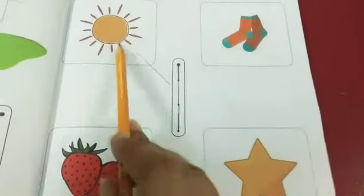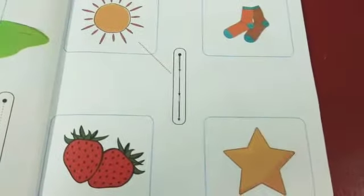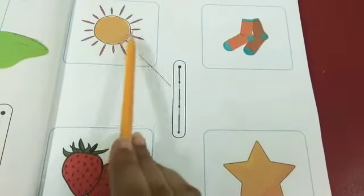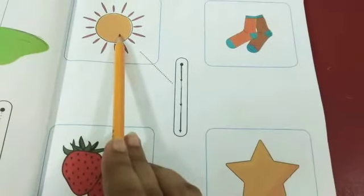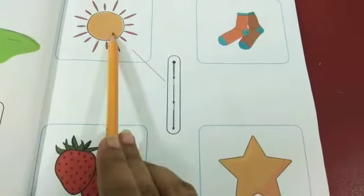Now we will match pictures with the number. Which picture is this? This is sun. One sun. So we will match number with the sun.